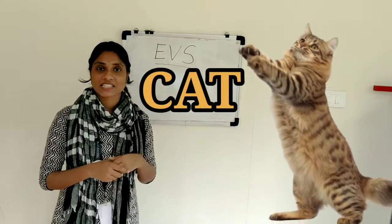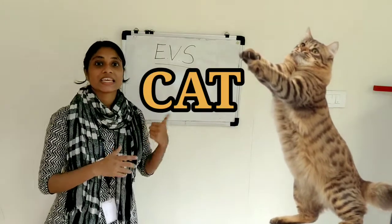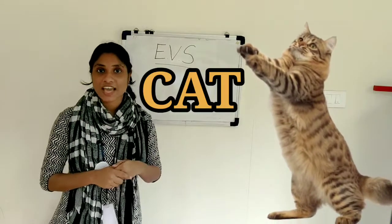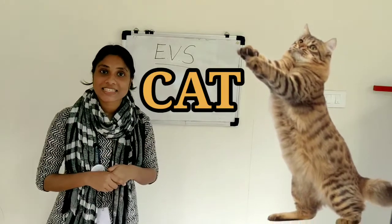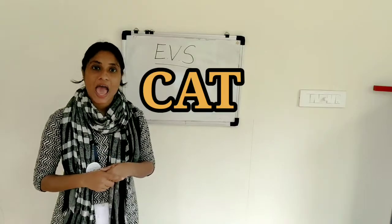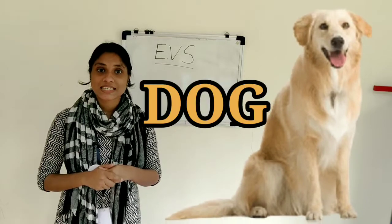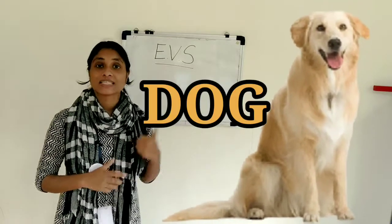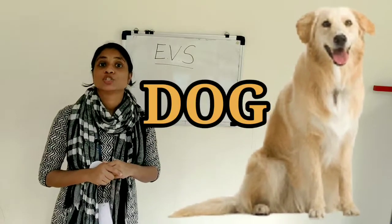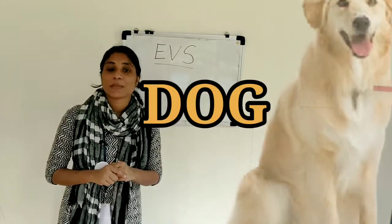This is a cat. Cat is a domestic animal. Cat is an example of domestic animals. And this is a dog. Dog is a domestic animal.